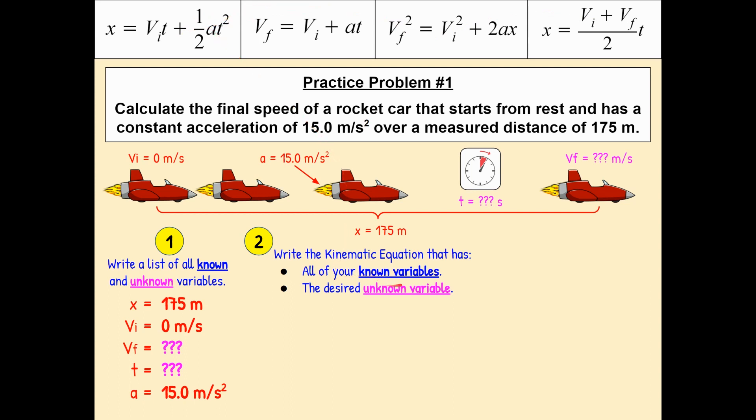And our equation that we choose also needs to have the unknown variable. Well, in this question, we're being asked to calculate the final speed. So that's Vf. So that's our desired unknown variable. We actually have two unknown variables, but only this one is considered the desired one because the question is asking about it. We're not going to worry about the fact that we don't know time. So which of these two equations has all of the ingredients that we need? Well, since we're trying to solve for Vf, and therefore it needs to be in our equation, we've got to go with this third equation. So that's our kinematic equation.